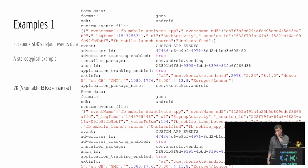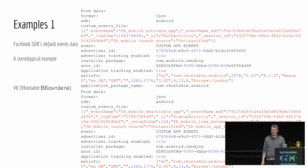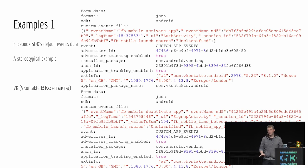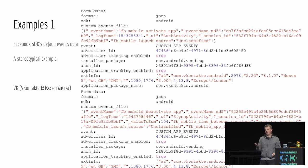Schauen wir uns das etwas mehr im Detail an. Das ist VK, ein russisches soziales Netzwerk - typisch, wie das SDK implementiert ist in der Standardeinstellung. Wenn die App startet und sich initialisiert, wird das SDK initialisiert. Wenn die App dann im Vordergrund ist, wird eine Nachricht geschickt. Wenn es in den Hintergrund geht, wird da was geschickt. Wenn es geschlossen wird, wird es geschickt. Man kann also die Nutzer profilen, über wie lange sie eine App verwenden.